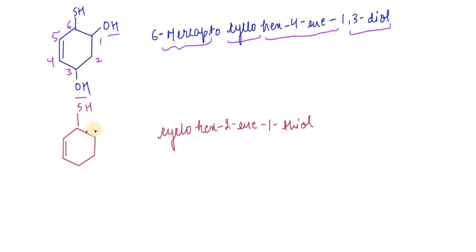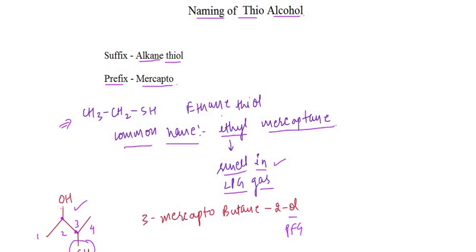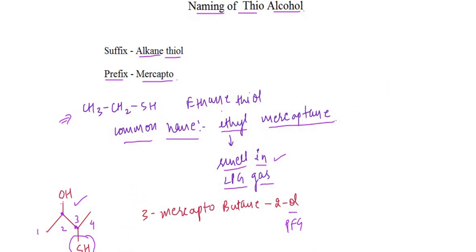Now if you look at this compound, this is the principal function group, so 1, 2, 3, 4, 5 and 6. So it is cyclohex - this is a prefix, this is root word, this is 1 degree suffix, and thiol is 2 degree suffix. That's how we will be naming the thioalcohols. Thank you.